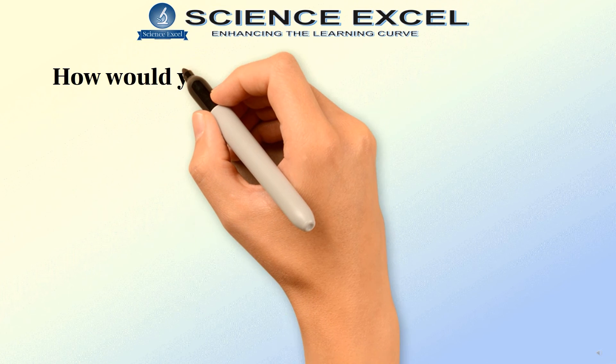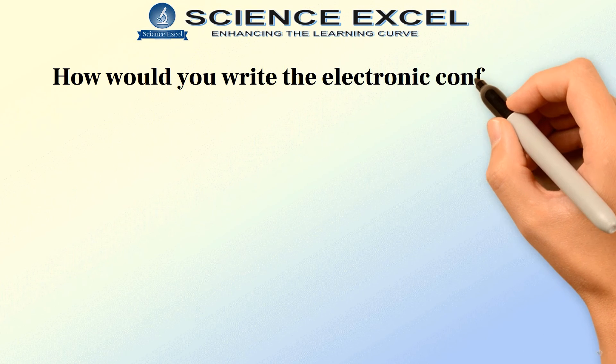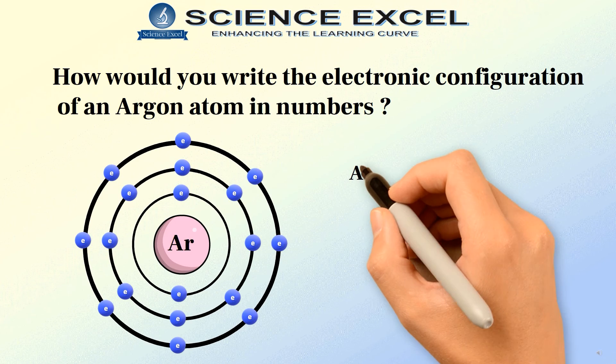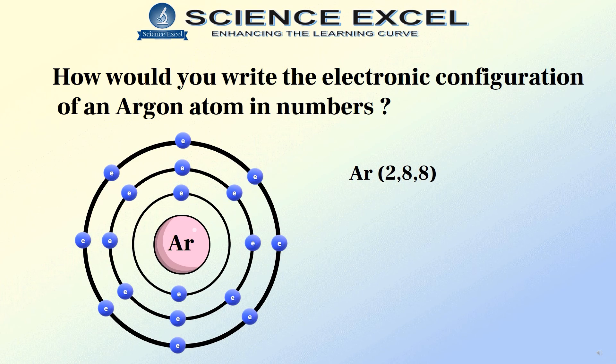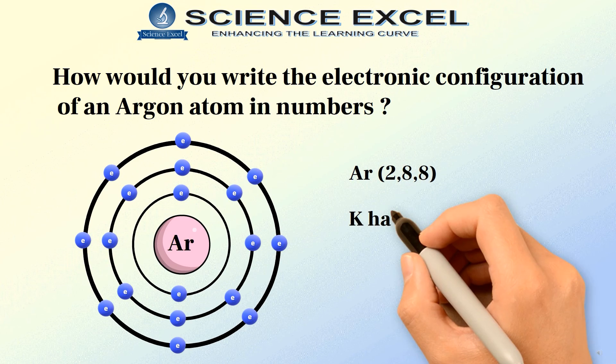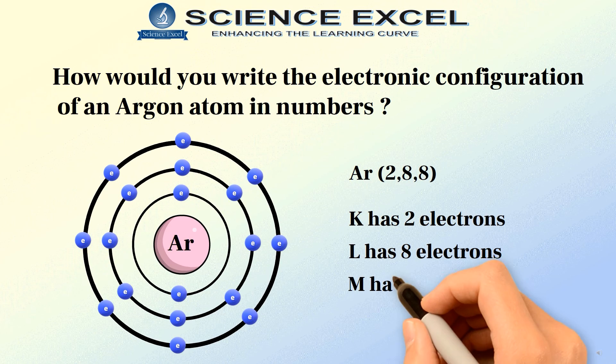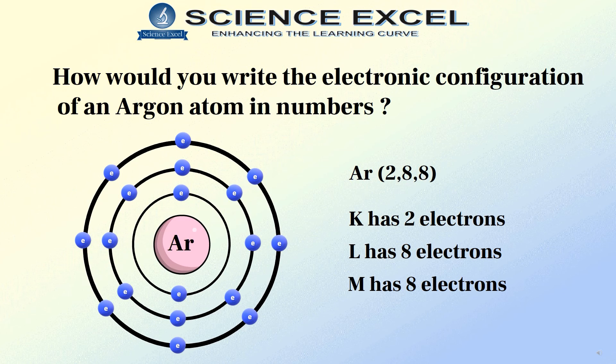So how would you write the electronic configuration of an argon atom in numbers? We write the symbol of argon followed by 2 electrons in shell K, 8 electrons in shell L and the last 8 electrons in shell M.